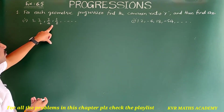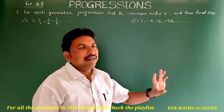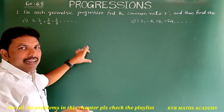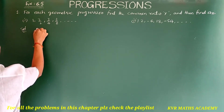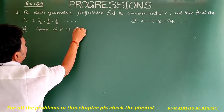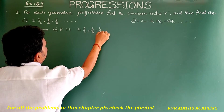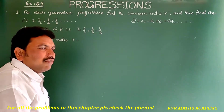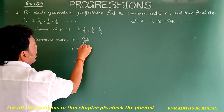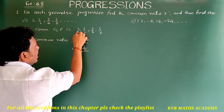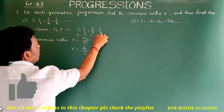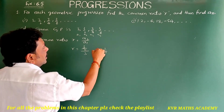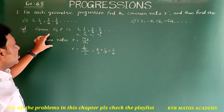The first GP is: 3, 3/2, 3/4, 3/8. The second one is: 2, -6, 18, -54, and so on. For the first series, we have to find the common ratio r. The given GP is 3, 3/2, 3/4, 3/8. We know that common ratio r is equal to a2 by a1. So r is equal to a2 (which is 3/2) divided by a1 (which is 3). This can be written as 3/2 × 1/3; the 3s cancel, giving r = 1/2.